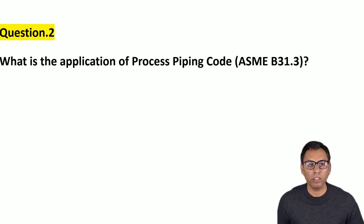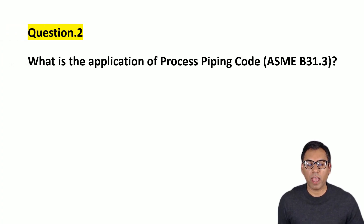Hi everyone. In this video I will talk about ASME B31.3, which is a process piping code. I will briefly talk about its scope, the industries which are included for this code, and I will also talk about exclusions. If you are ready, let's start. The question is: what is the application of the process piping code, which is ASME B31.3?